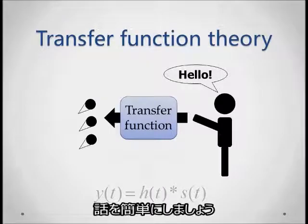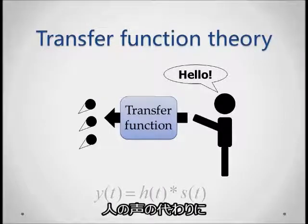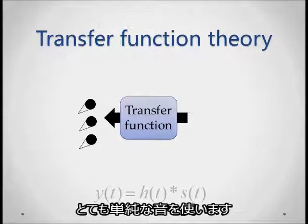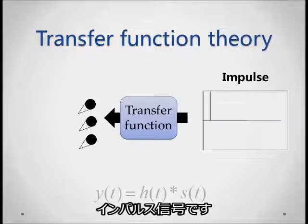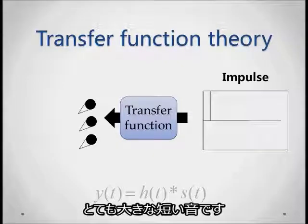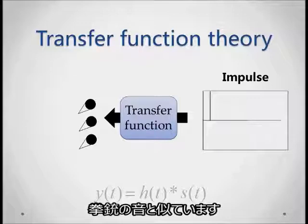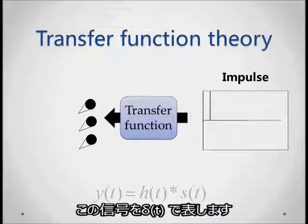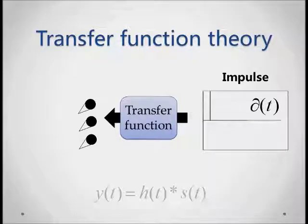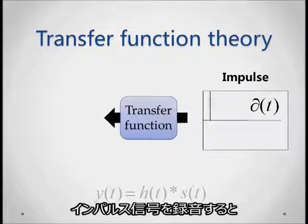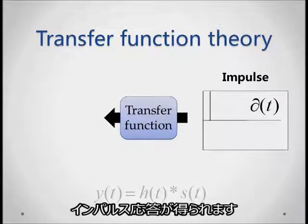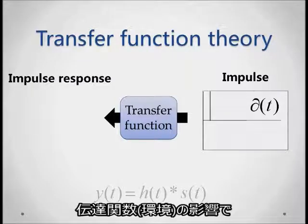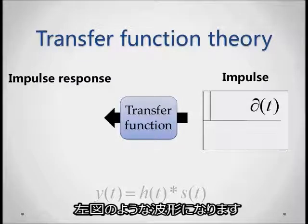Now let's simplify this. Instead of a human talking, we take the most simple sound possible. This is called an impulse — a very loud, short sound, in olden days approximated by a gunshot. Let's call this impulse delta. When we record an impulse, we get what we call an impulse response. Because of the effects of the transfer function, or environment, it would look something like this.